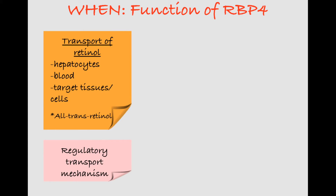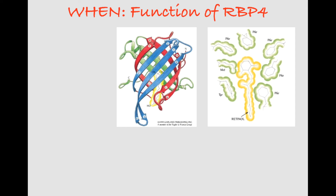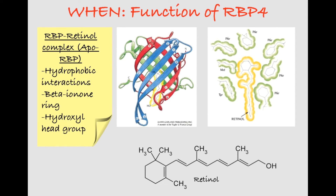RBP can be secreted from the liver only when all-trans retinol is present. The RBP complex bound to retinol is called holo RBP, while the complex without retinol is called apo RBP. While retinol's hydroxyl head group faces the open end of the beta barrel, its beta ionone ring forms a hydrophobic interaction inside the barrel, generating a small conformational change. It's hypothesized that this conformational change is what prompts the apo RBP complex to be released from the liver. Once released from the liver, RBP moves through the bloodstream to its target tissues.